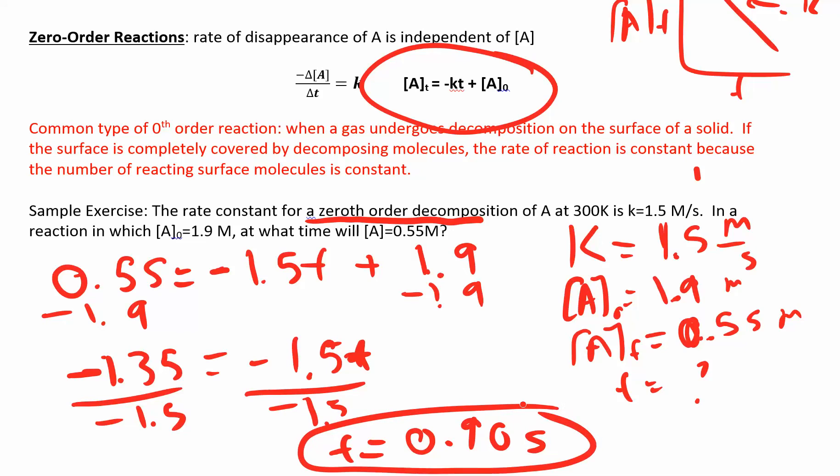So again, the key for all these things is figuring out which order of the reaction do you have? Do you have zero, first, or second? They have to tell you. You could figure it out based off of the units of the rate constant if you wanted to, but I'll tell you which one it is. And then you find the right equation.